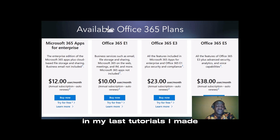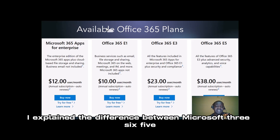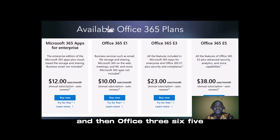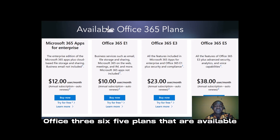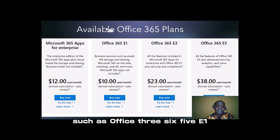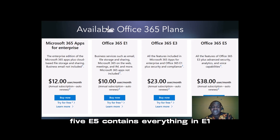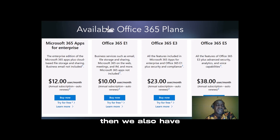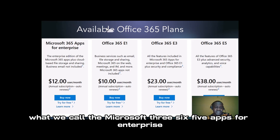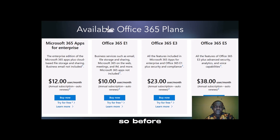In one of the tutorials I made, I explained the difference between Microsoft 365, Office, and Office 365. We still have some Office 365 plans that are available, such as Office 365 E1, Office 365 E3, and Office 365 E5. E3 contains everything in Office 365 E1 with additional services, and Office 365 E5 contains everything in E1 and E3 with additional services. We also have what we call Microsoft 365 Apps for Enterprise.